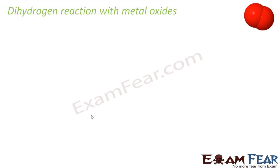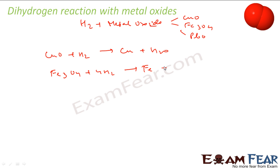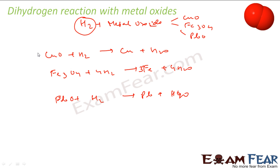Let's see the reaction of hydrogen with metal oxides. Copper oxide reacted with hydrogen gives copper metal and water — copper is reduced. Fe₃O₄ reacted with hydrogen gives iron metal and water. Lead oxide reacted with hydrogen gives lead metal and water. We can see that hydrogen acts as a reducing agent — it reduces the metal oxide to the metal.